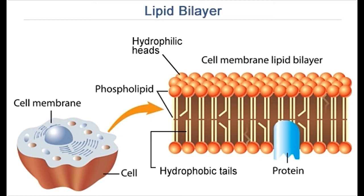Carbohydrates are present on the exterior surface of cells. These bind to proteins or lipids at the exterior surface to form glycoproteins or glycolipids, respectively. Together, these glycoproteins and glycolipids are referred to as the glycocalyx.